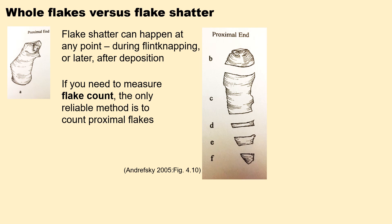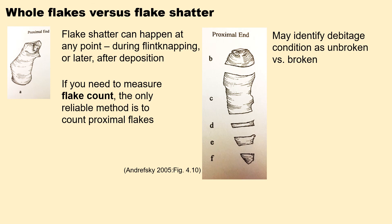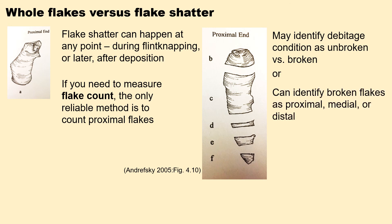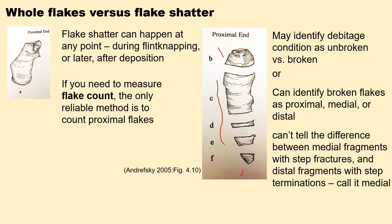If you need to measure flake count, the only reliable method is to count the proximal flakes. Some analysts identify debitage conditions simply as broken versus unbroken. Or you can go further and identify the broken flakes as either proximal — having the striking platform — medial, or distal. You can't tell the difference between medial fragments with step fractures and distal fragments with step terminations, and thus all such fragments would be called medial.